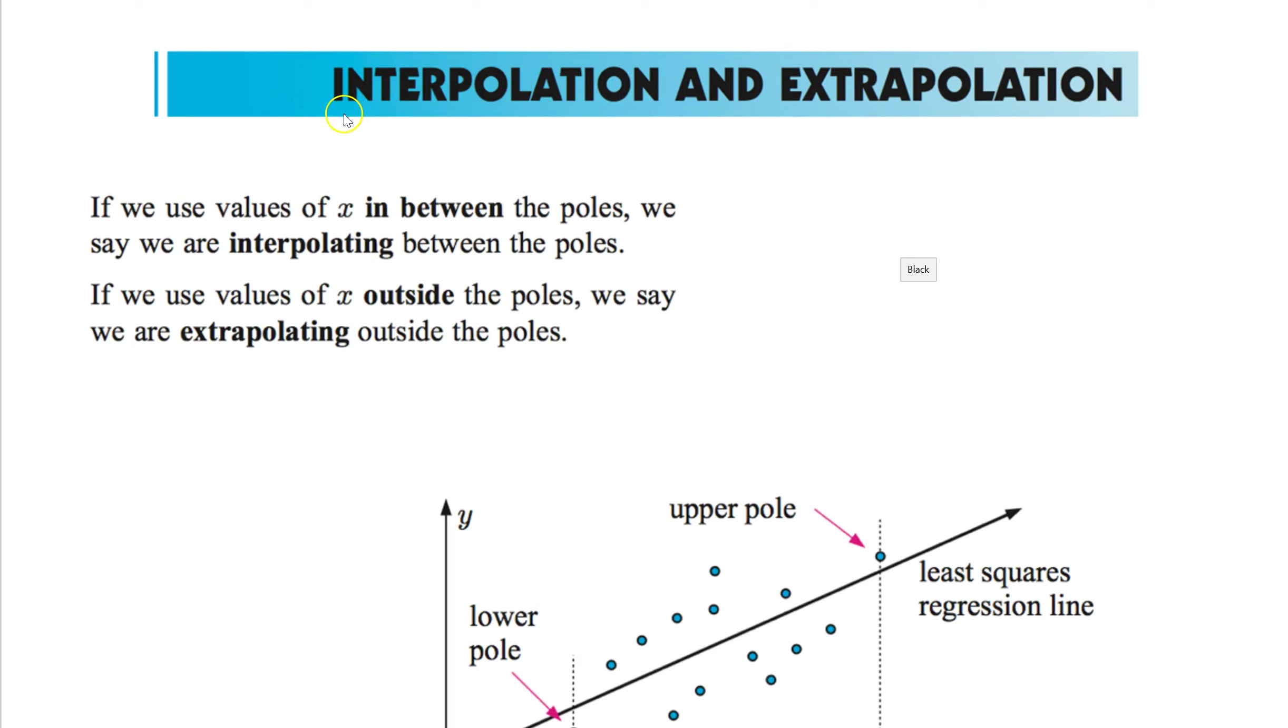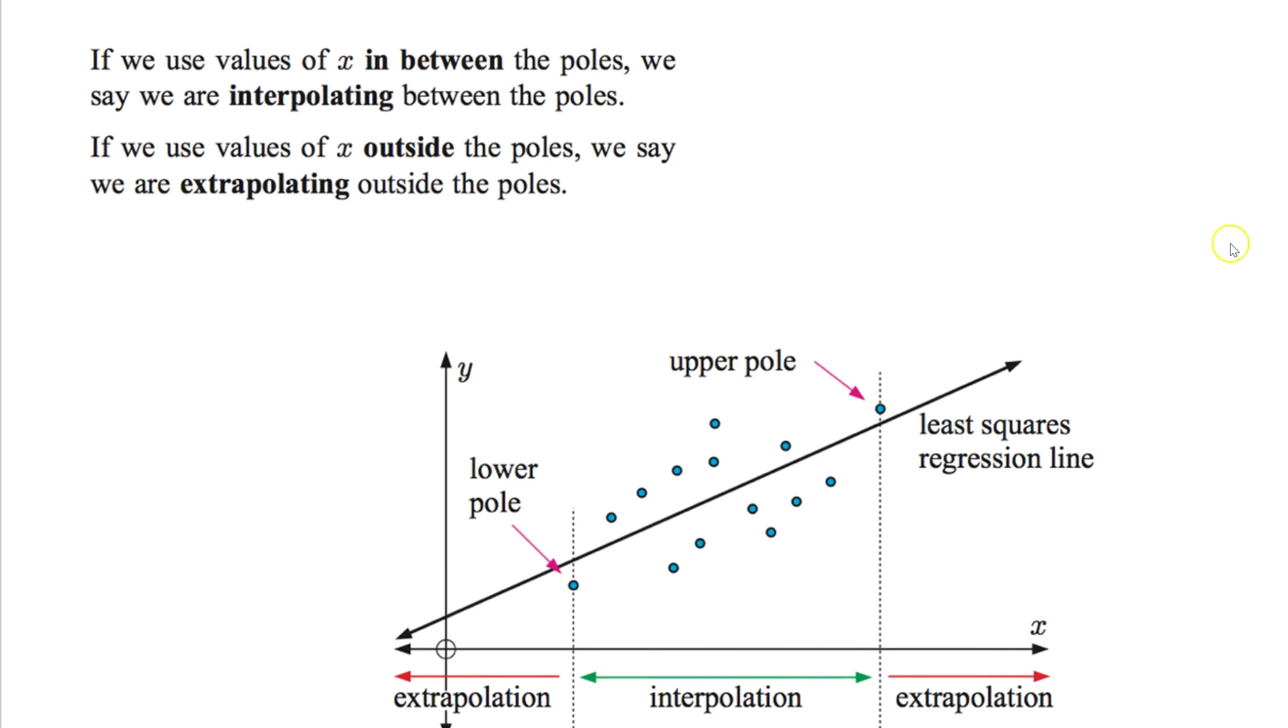Interpolation. Extrapolation. This is all about how good of an estimation your guess, your data is, when you find the equation. So this picture is all you really need. Anything that falls within your min value, which we have right here, and your max value, is called interpolation. Inter. So right. It's in between your two. So between your data set. That's interpolation. It falls in between your data set. That's the one that's generally going to be a good estimate. Because it kind of falls within your data set. So it's going to be a good estimate.